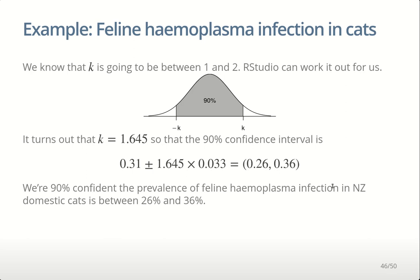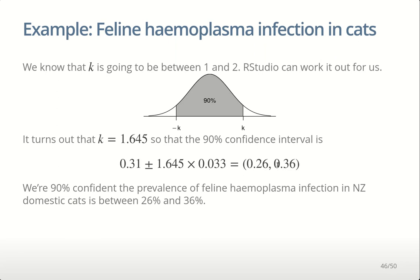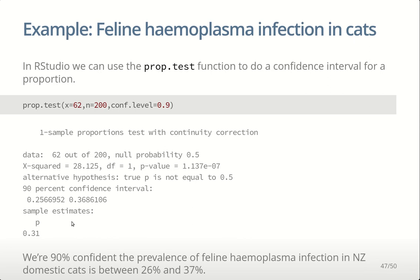In RStudio, we use prop.test instead of t.test — t.test is for means, prop.test is for proportions. We give the number of positives, the total number, and the confidence level. Our sample estimate is 0.31 and our confidence interval is 0.26 to 0.37 — pretty much the same as what we got by hand, with a slight difference because the computer uses a continuity correction. Our conclusion is the same: we're 90% confident the prevalence of feline hemoplasma infection in New Zealand domestic cats is between 26% and 37%.